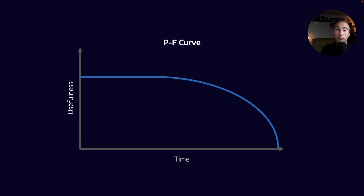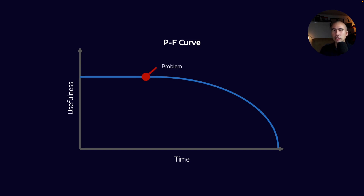This is the P to F curve of machine failure — it's probably something that you're familiar with. The idea is that a machine is operating at a certain level of usefulness, and then at some stage we have a problem event P, which causes a degradation in usefulness, which eventually leads to a functional failure, F. We can use the P to F curve as a lens to understand the different types of maintenance.